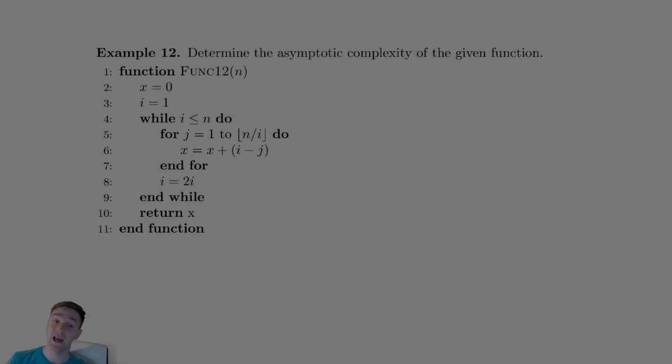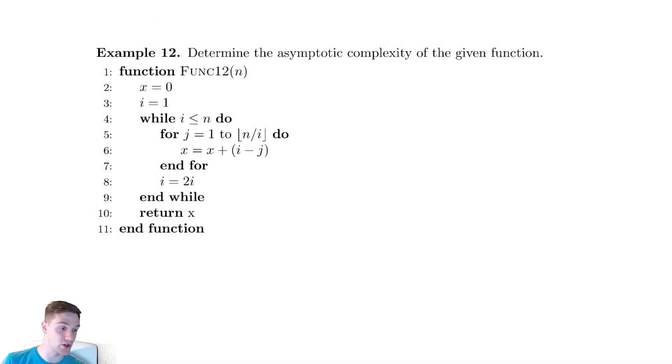In this example, we have what might look like a nightmare of a function. We have a for loop that has this strange n over i quantity appearing. So let's see how this affects stuff.